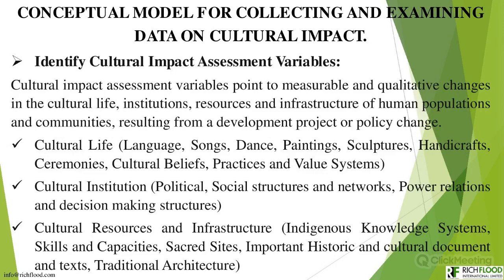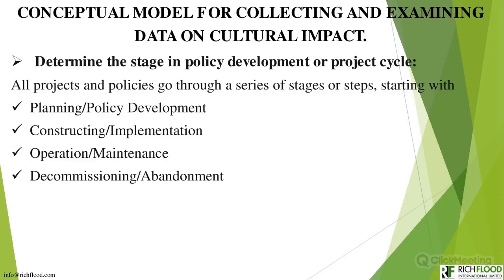The third variable category is cultural resources and infrastructure, which includes the indigenous knowledge system — covering wisdom, skills, and capacity — sacred sites and sacred groups, places of historic importance, cultural significance including monuments, historical sites, antiquities, arts, theater, drama, and the traditional architecture embedded in such systems.